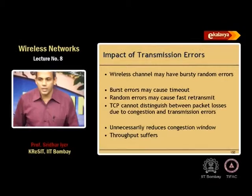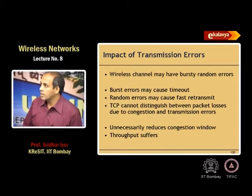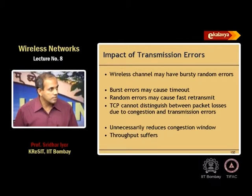Throughput is the area under the congestion window curve over time. You want to maximize this. In wireless, the channel has bursty and random errors, so TCP gets confused. Every time there is a packet loss, TCP assumes it happened because of congestion in the network, which becomes a fundamental problem.